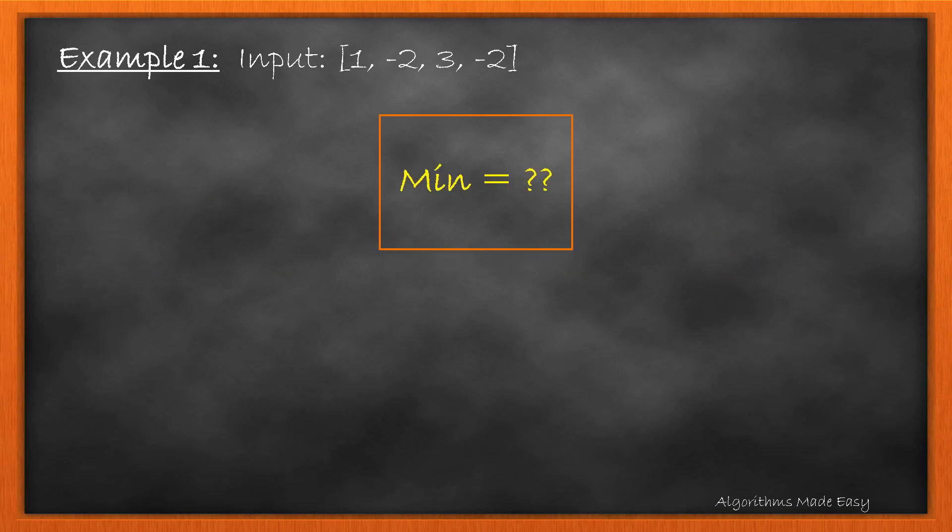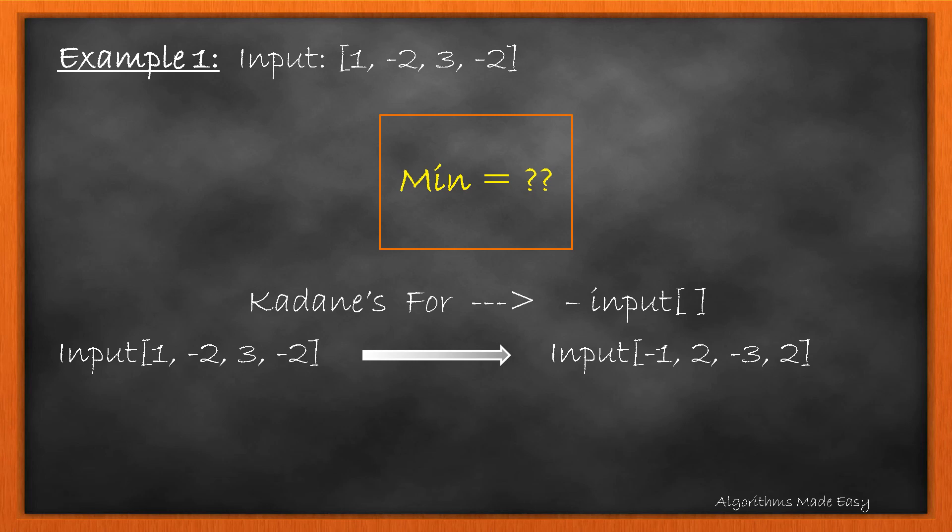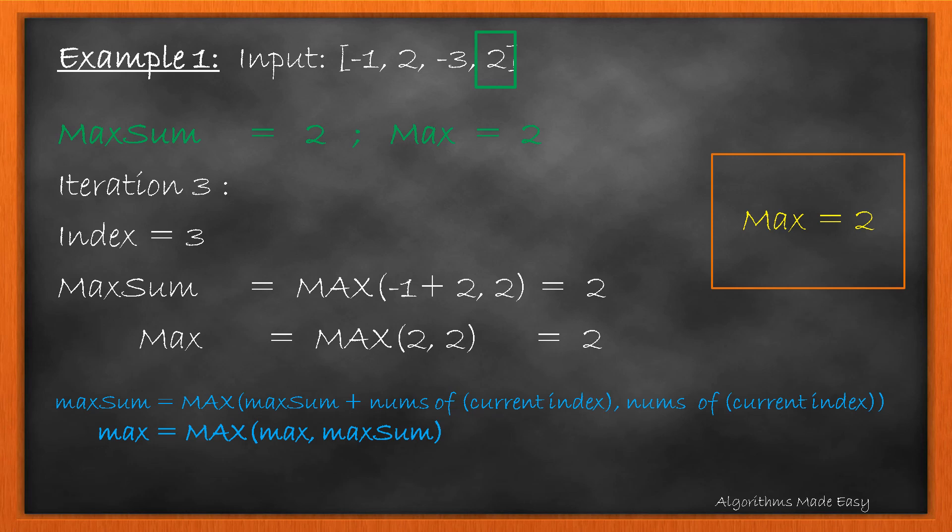We can get this too by using our Kadane's algorithm but with a slight change in the input array. To find the min, we will flip the sign of all the elements in the array and find the max of this new array. As we have flipped the sign of max, it will indeed be the minimum of the array. We apply Kadane's on this updated array. And, similar to what we did previously, we get the max at the end.